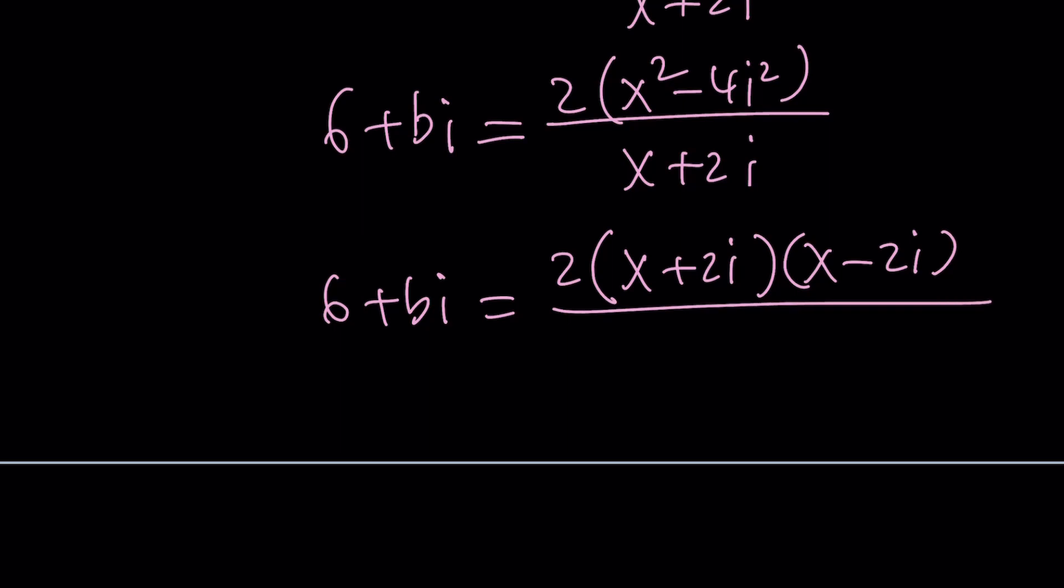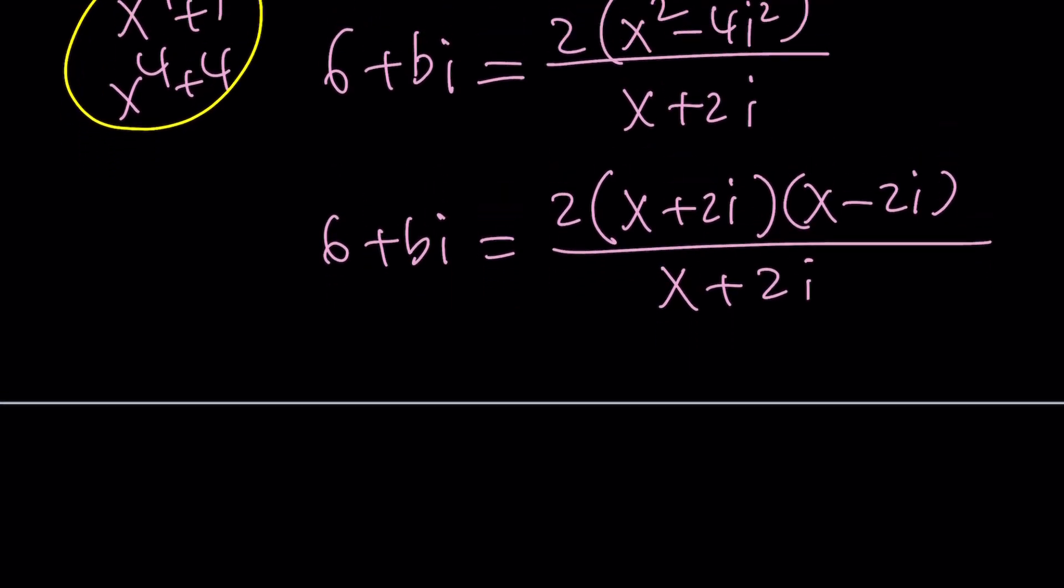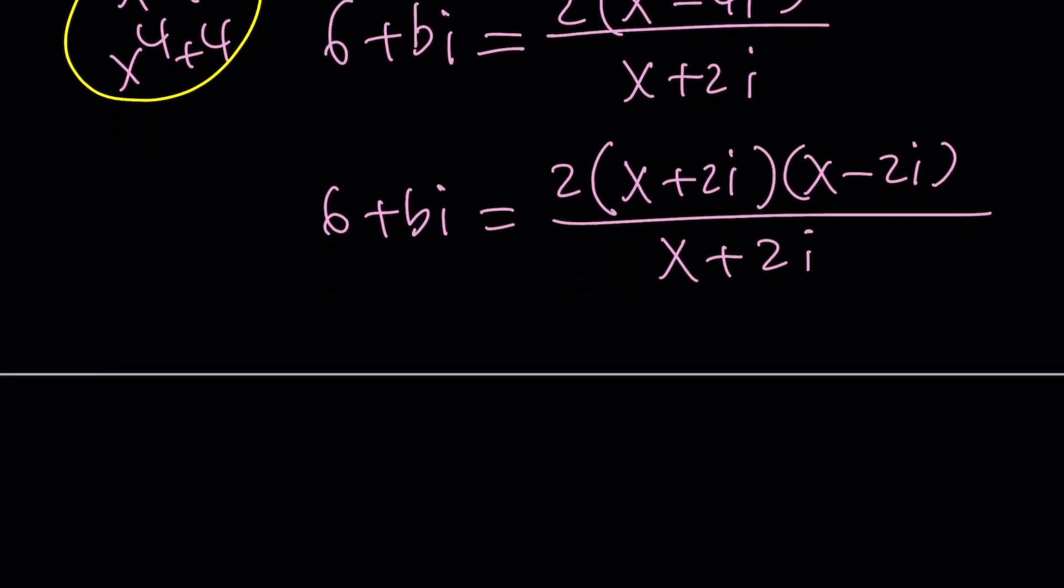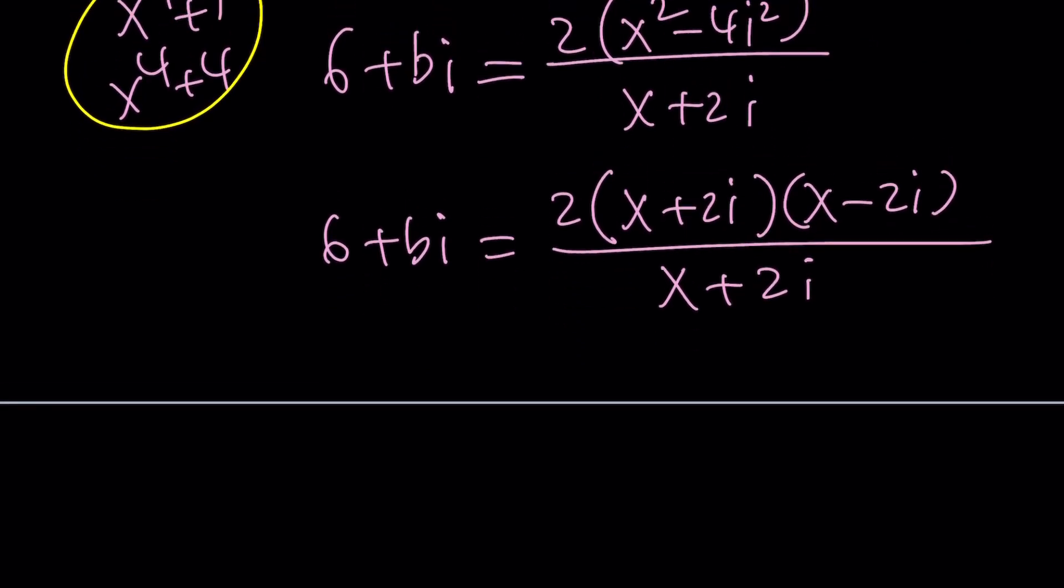In real algebra, sum of 2 squares is not always factorable. Sum of 2 fourth powers is a little different. But we're talking about squares here. And reals don't allow us to factor it. But with complex numbers, it's a different thing. We can do it. And notice that x plus 2i cancels out, leaving us with 6 plus bi equals 2x minus 4i.